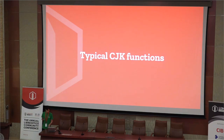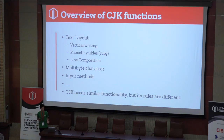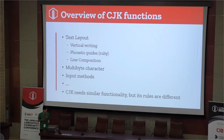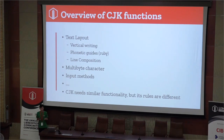Typical CJK functions include many features. One is layout: vertical writing. There is also phonetic guide, called Ruby. And line composition, multi-byte characters, and input method — which is very important. Japanese, Chinese, and Korean each have a different input method. CJK needs similar functionality, but its rules are different — that's the difficult point.